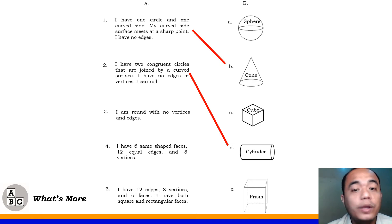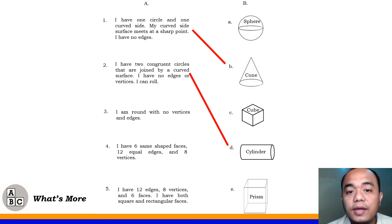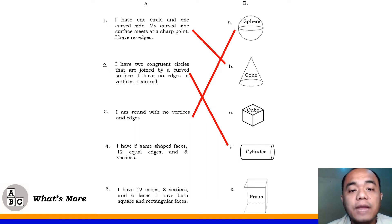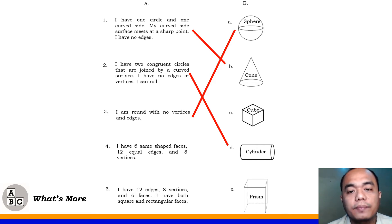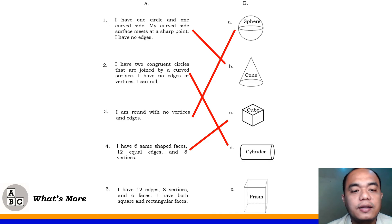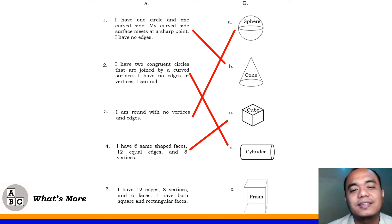Number 3: I am round with no vertices and edges. The solid figure described is a sphere. Number 4: I have six same-shaped faces, twelve equal edges, and eight vertices. The answer is cube — letter C. Number 5: I have twelve edges, eight vertices, and six faces. I have both square and rectangular faces. Obviously, that's a prism — letter E.